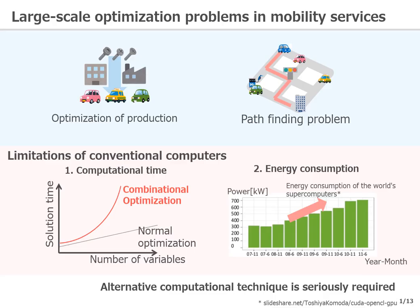I think all of the audience would agree that large-scale optimization problems are becoming important. For example, in the production process, before it was sufficient to think about the combination of materials, factories, and products in a specific area. But today we should take into account combinations all over the world.